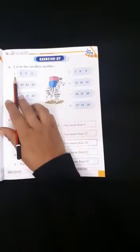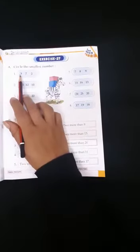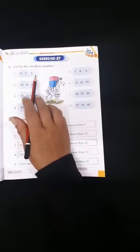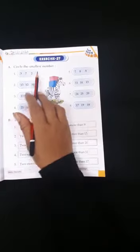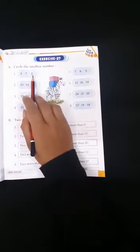Number 1. Children, here you can see 3 numbers are given. 1 is smallest. Let us see. 3, 7, 2.